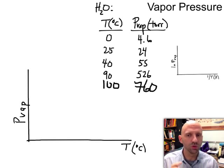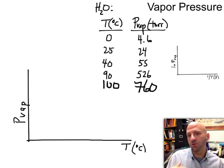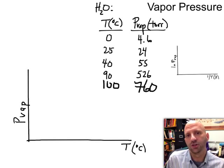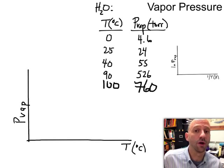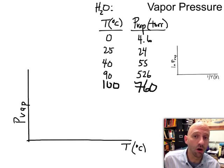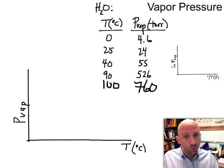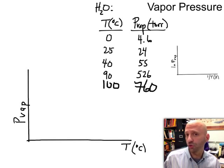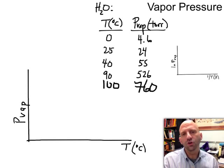So boiling points will change because the surrounding pressure will change. Normal boiling points don't change. The normal boiling point of water, regardless of where you are, is going to be 100 degrees Celsius. But the boiling point of water, that's going to vary. For us here in Hackensack, it's darn close to 100 degrees Celsius. But if you go to Denver, the mile-high city,